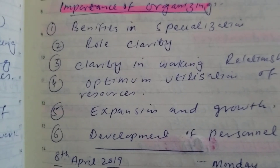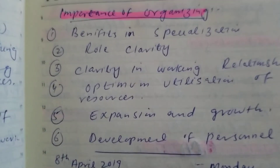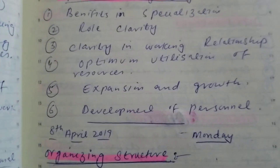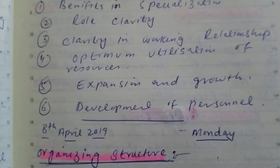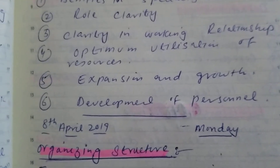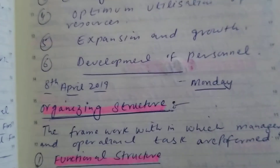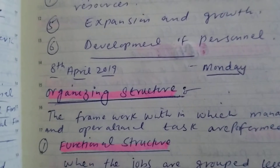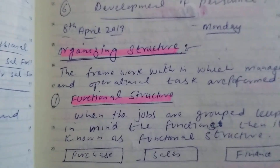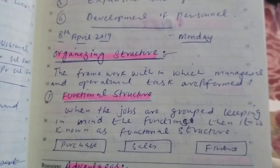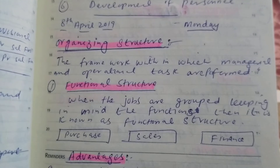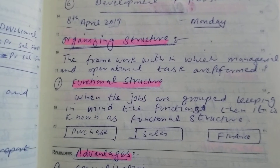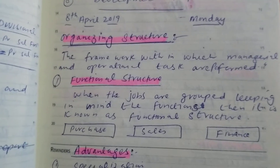Fourth point is establishing reporting relationships — who will report to whom. The importance of organizing includes benefits in specialization, role clarity, clarity in working relationships, optimum utilization of resources, expansion and growth, and development of personnel.